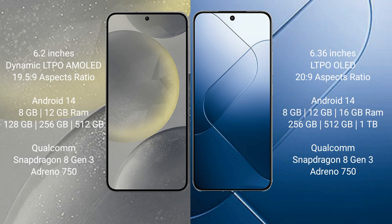Samsung Galaxy S24 runs on the Android 14 operating system. Xiaomi 14 also runs on Android 14. Samsung Galaxy S24 comes with 8GB RAM and 128GB or 256GB internal storage.